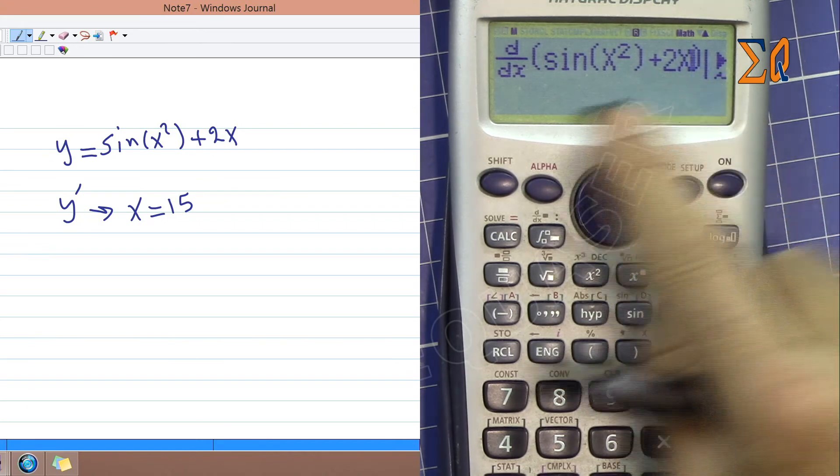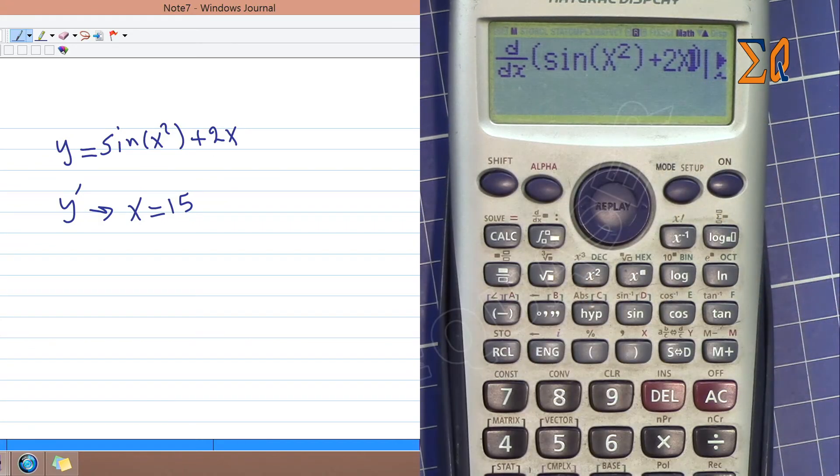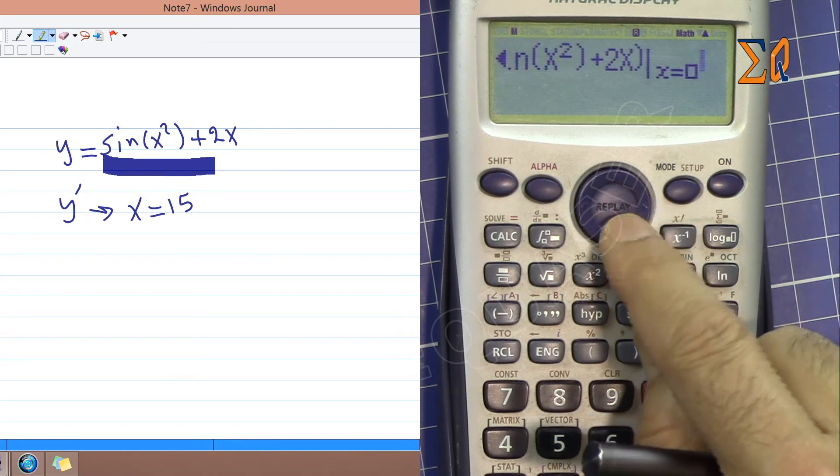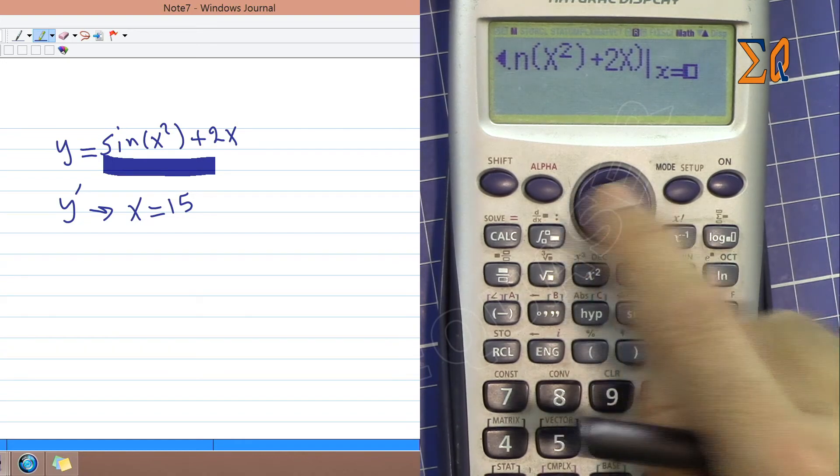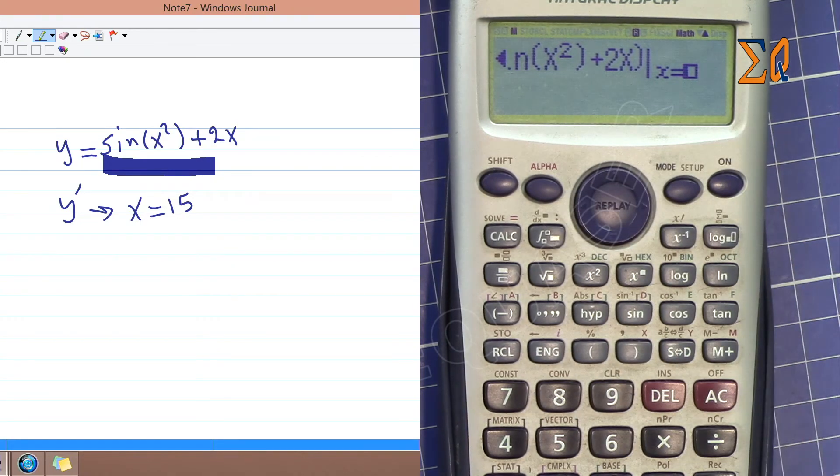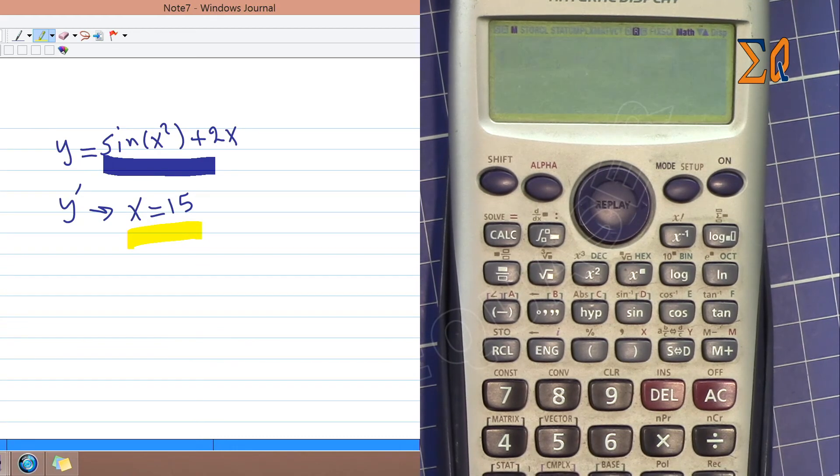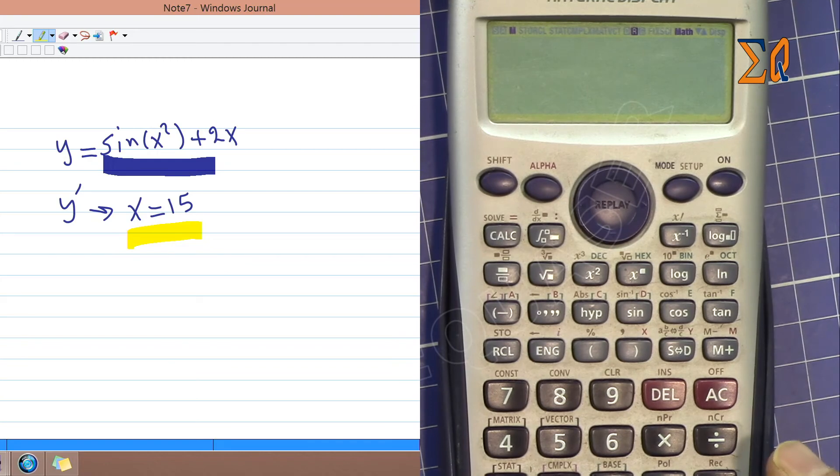Now scroll to the right, and it says evaluate at x. I'm entering 15 here because we want x = 15. When you press equal sign, it takes the derivative and plugs in 15 into the equation. The answer is 13.01958183.